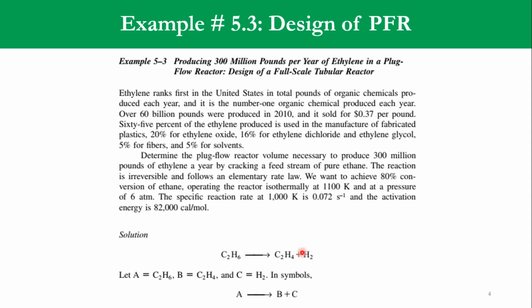By cracking of ethane, as you can see in this reaction, ethylene and hydrogen is produced. We can say ethane as A, ethylene as B and hydrogen as C. So A goes to B plus C in an irreversible manner. The reaction is irreversible and follows an elementary rate law. We have already studied that type of rate law in our chapter number 3 or building block number 2.